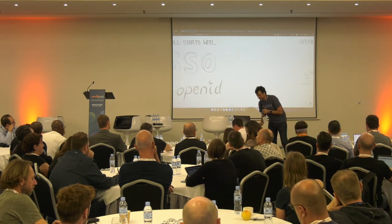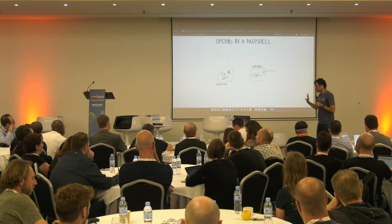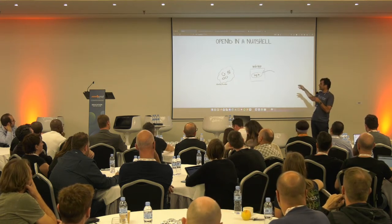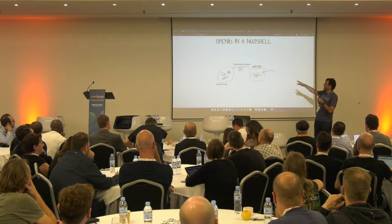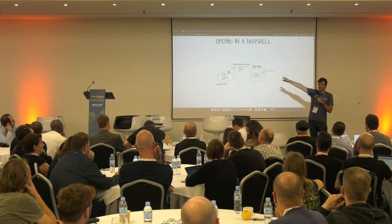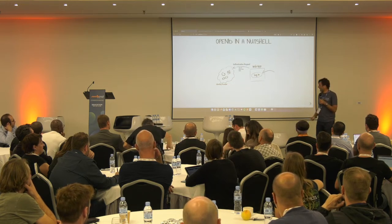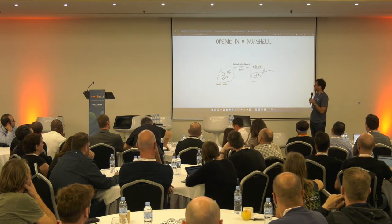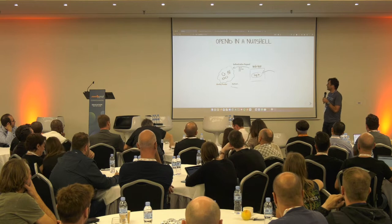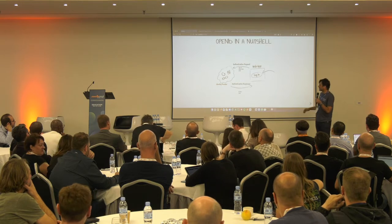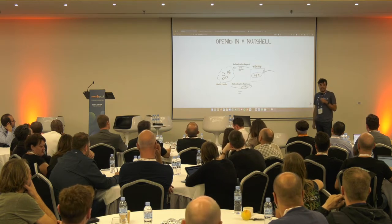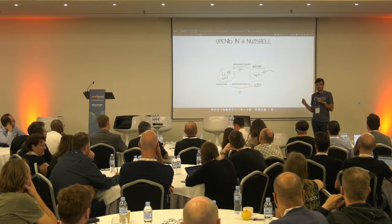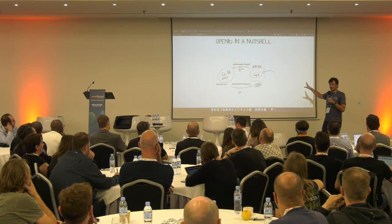A quick recap of how OpenID works outside of LTI: you have a web app, you say you want to log in using Google or another provider. You go to the authentication provider, make an authentication request, log in, and it comes back to your web application with an authentication response — an ID token, which is a JSON Web Token containing identity information about the user. That's OpenID in a nutshell.